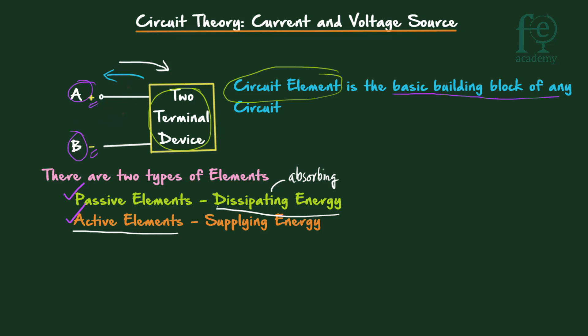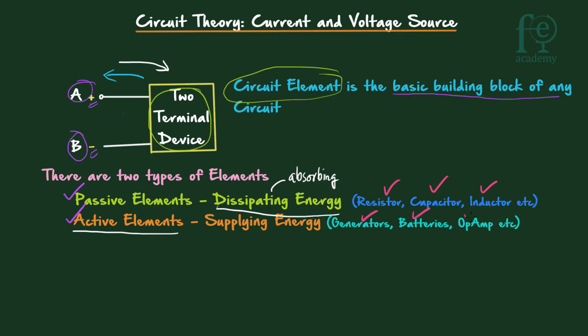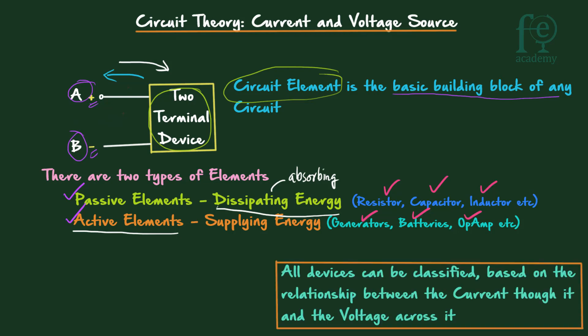The best example of an active two-terminal device which is supplying energy is a battery. Resistor, capacitor, and inductor are examples of passive elements, while generators, batteries, op-amps, and ICs are examples of active elements.